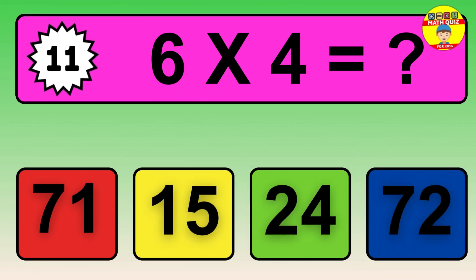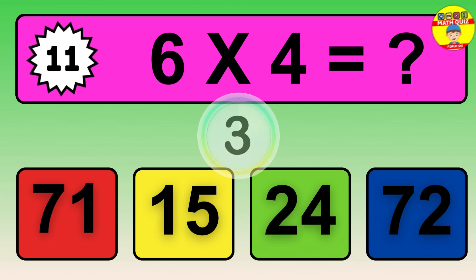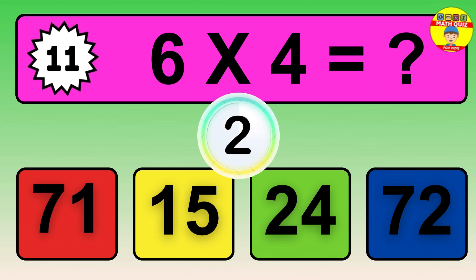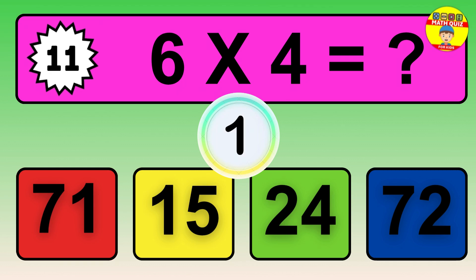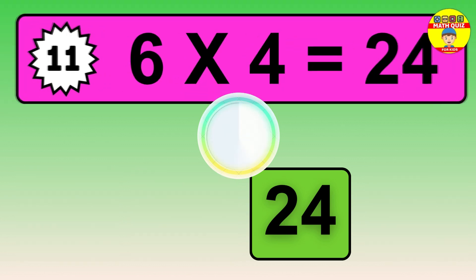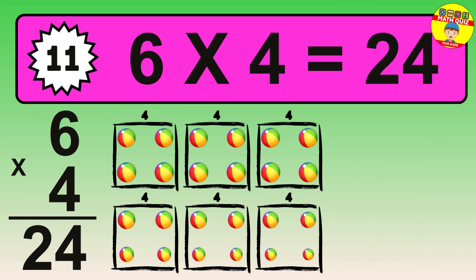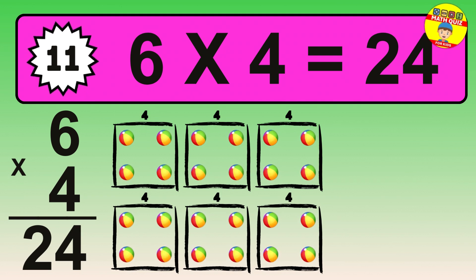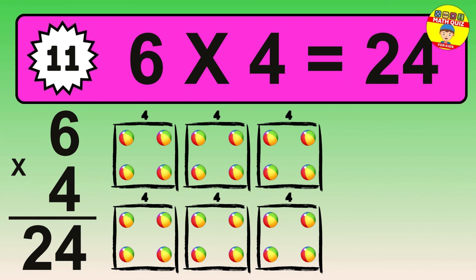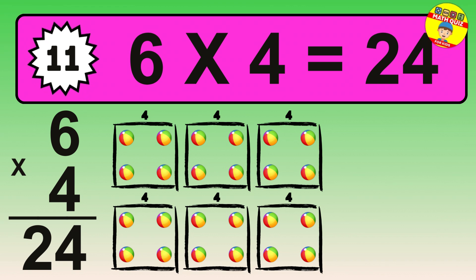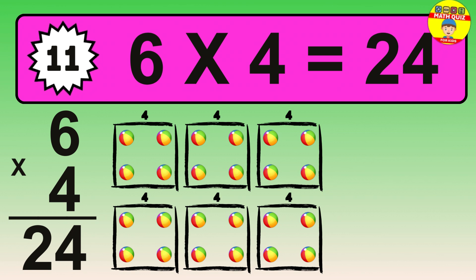Question 11. 6 times 4 equals what? The answer is 6 times 4 is 24. To calculate, we have 6 groups with 4 balls each one. So, how many balls do we have? 24 balls.